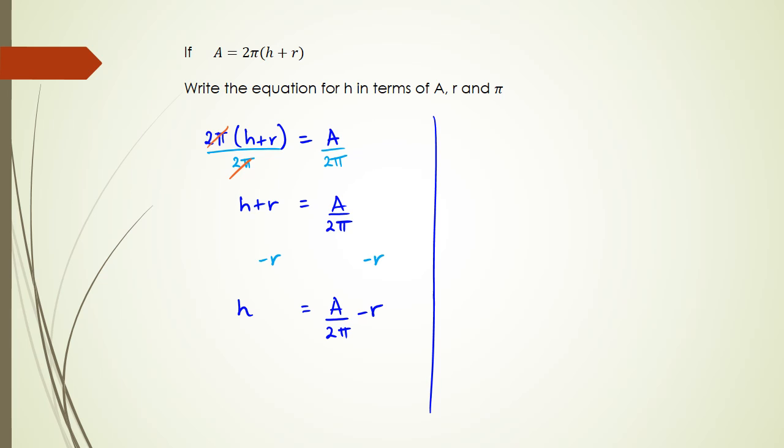One thing that I have noticed people do in terms of mistakes is sometimes they do this: when they see A equals 2π times h plus r, what they do is they subtract the r first on both sides and write this as A minus r equals 2π times h. Now this is actually incorrect, folks.